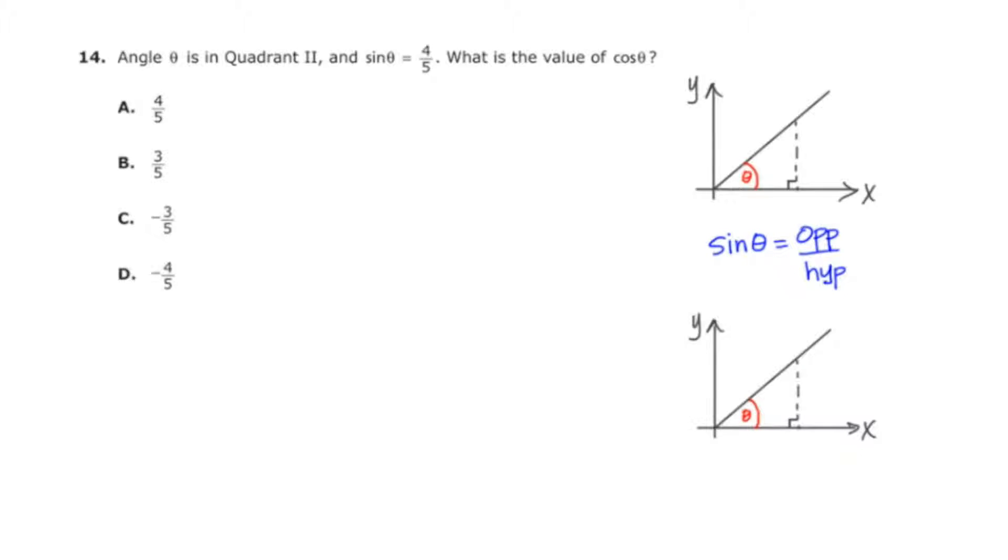And I think students also will remember that the cosine of theta will equal the adjacent side over the hypotenuse when theta is in a right triangle.